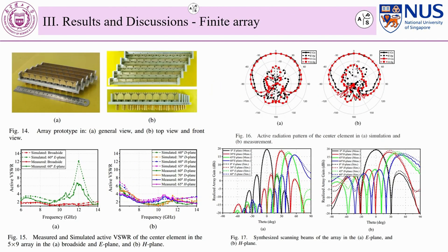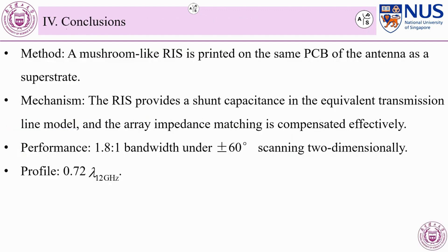Finally, we finished the parametric optimization and got the prototype. The results verify that the mushroom-like RIS structure provides capacitance as compensation for the input impedance matching of the antenna. The array has achieved a 1.8:1 bandwidth under 60-degree scanning in both dimensions. This is a compact and effective design that can be extended to large phased array applications.